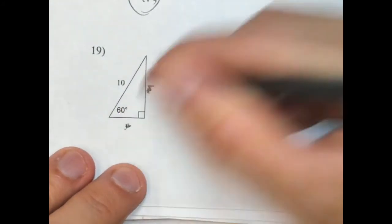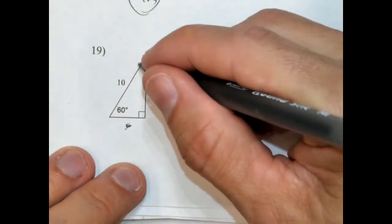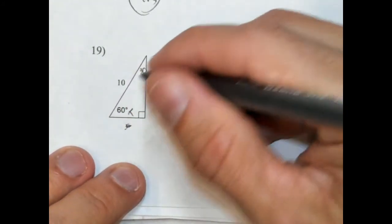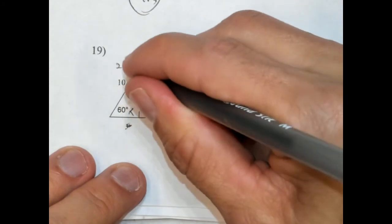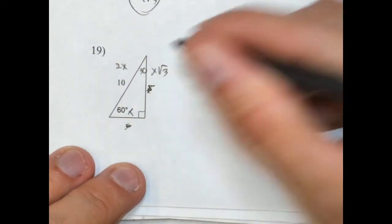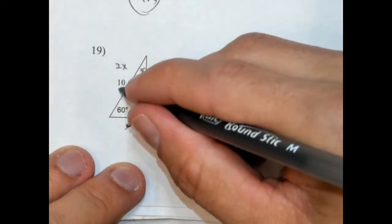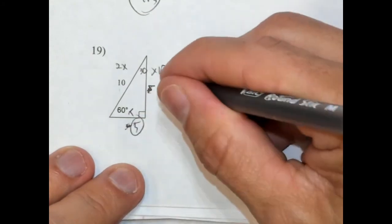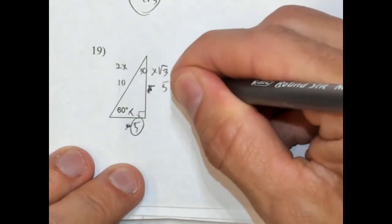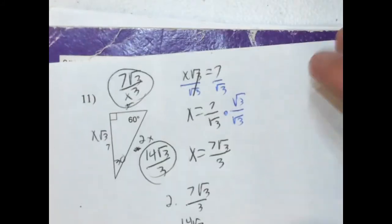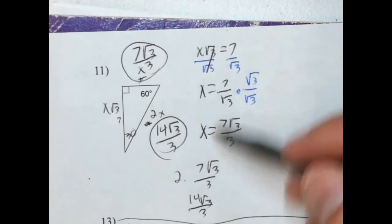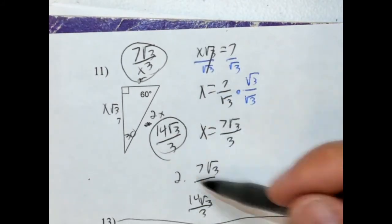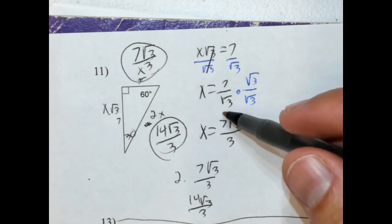Last one. This is 30. So that means this is x, this is 2x, and this is x radical 3. So 2x is 10, that means x is 5, and this is 5 radical 3. Really, the only one that was kind of tricky was number 11, just because it involved getting rid of the radical in the denominator.